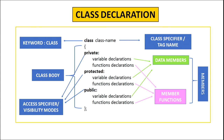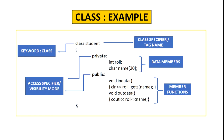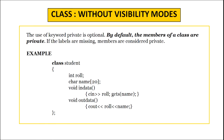We will talk about inheritance later. Now let us take an example of the class student. We start with the keyword class followed by the name of the class, which is student — also called tag name or class specifier. The data members of this class are role number and name, which are kept in the private visibility mode. The function in_data inputs the details and the function out_data displays all the data members. If a class is defined without any visibility mode, by default it is taken as private, making the class completely hidden from the outside world.